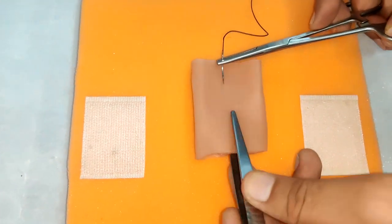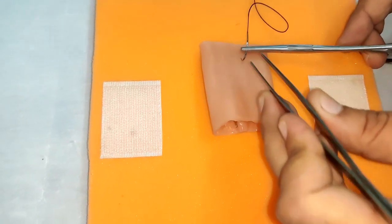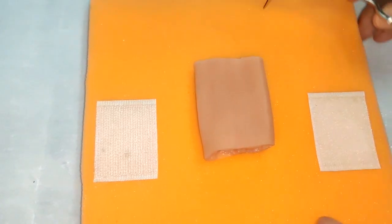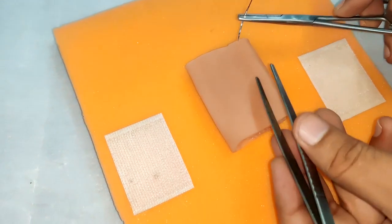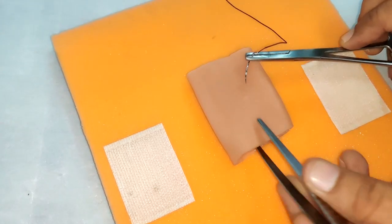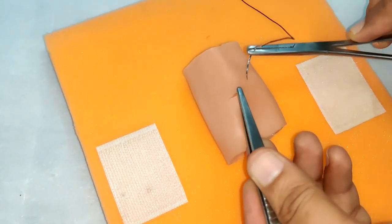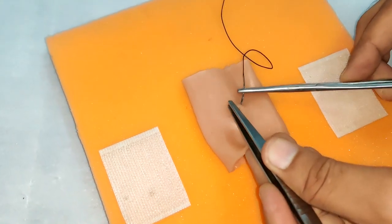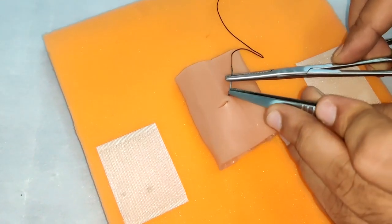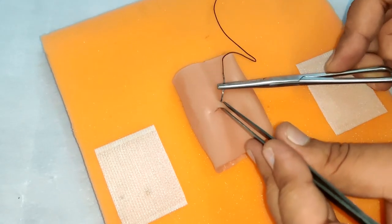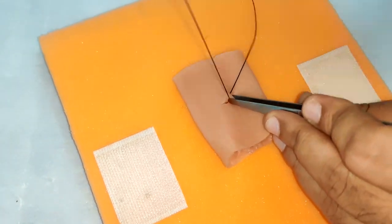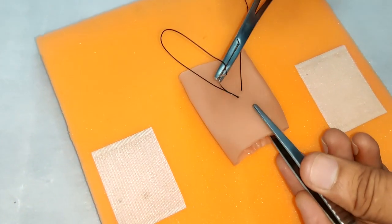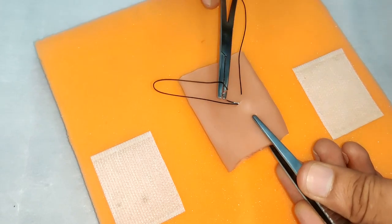The first way to suture is that we start from beyond the perforation and take simple interrupted sutures. So from beyond, we are coming inside and from inside, we are going out. And then again, from inside, we are coming out on the same level.